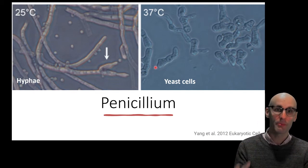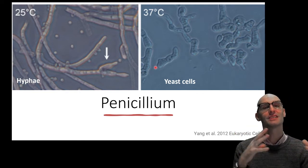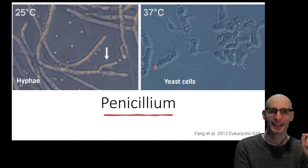Dimorphic. And it means that they can appear both as yeast and with these hyphae-like structures. That's super important because candida albicans, which is one of the most common fungal infections to infect humans, is also dimorphic. But I'm going to touch on that in a later video.